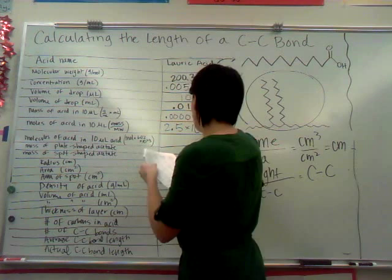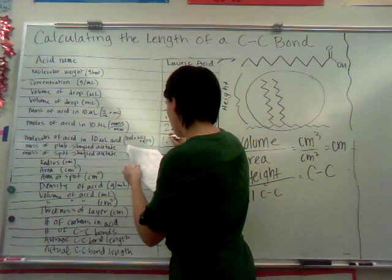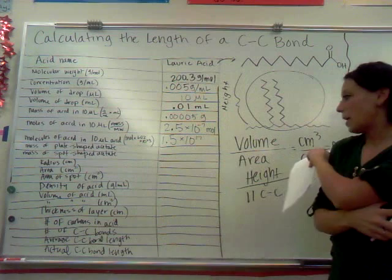Just for fun, how many molecules of acid are we adding? Take moles multiplied by Avogadro's number, 6.02 times 10 to the 23rd. We are adding 1.5 times 10 to the 17th molecules of lauric acid. So just a little bit.